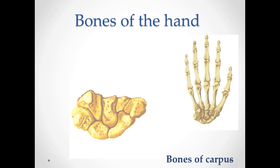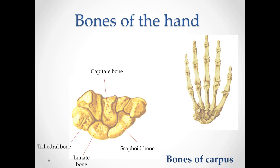Let's analyze the bones of the carpus. Scaphoid bone, os scaphoideum — it is the largest of the first row of bones. The lunate bone, os lunatum — it has the appearance of a crescent moon. Together with the scaphoid bone, it covers the head of the capitate bone. The triquetral bone, os triquetrum — has the shape of an irregular pyramid. The pisiform bone, os pisiforme. These were all bones of the proximal row.